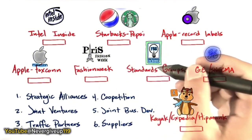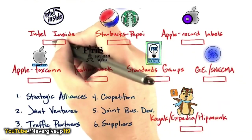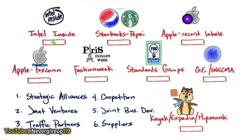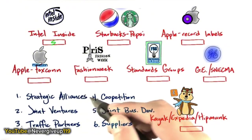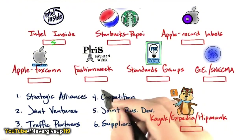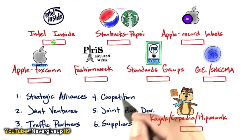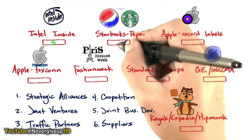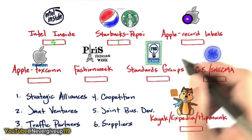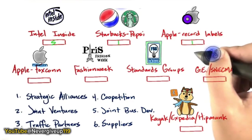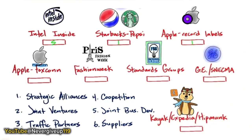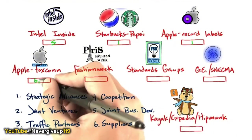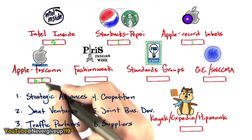Intel Inside was a great example of joint business development — they exchanged advertising dollars for a prominent position on the outside of computer manufacturers' boxes, and what manufacturers got in exchange was gross margin they never would have gotten in a low-margin business. Starbucks and Pepsi promoting Frappuccino was a great example of a strategic alliance. Apple and the record labels was another great strategic alliance. Apple and Foxconn is a great example of a supplier, and might at times be a good example of a joint venture as well.